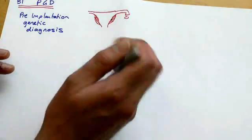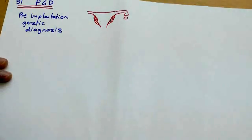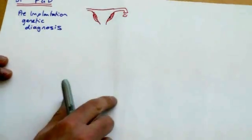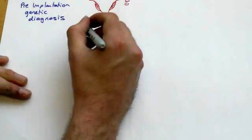So what we're going to do in this technique is to test that embryo, that ball of cells, for any genetic conditions before it gets a chance to implant. Now the way it works is there's several steps to it.